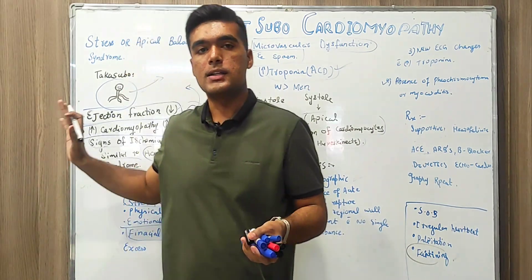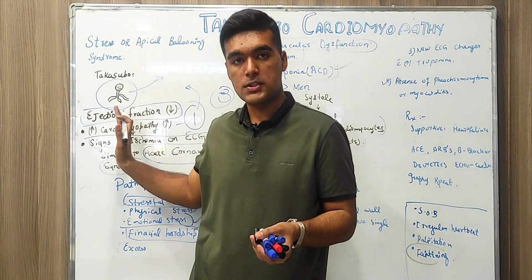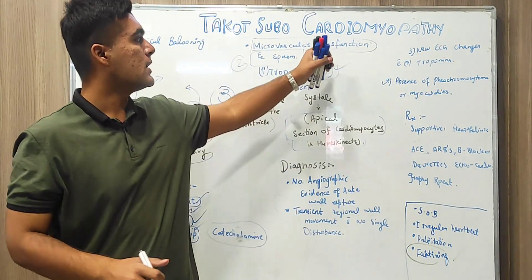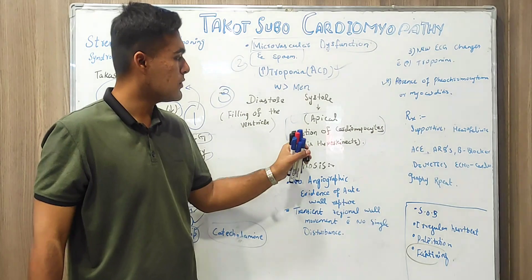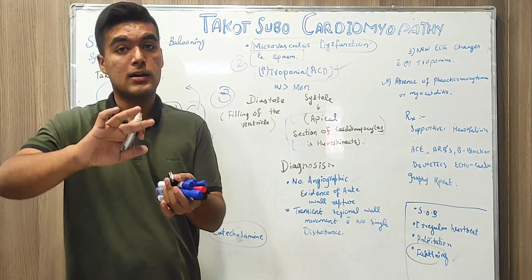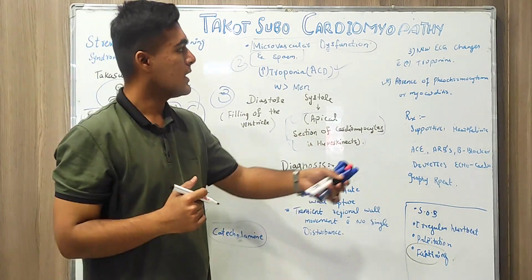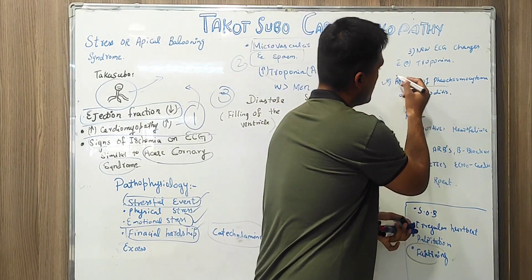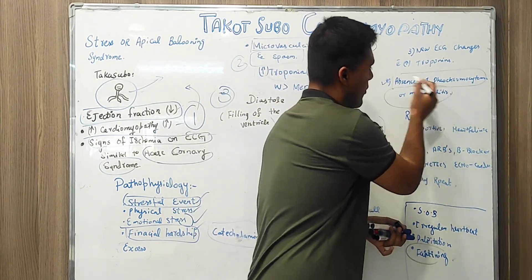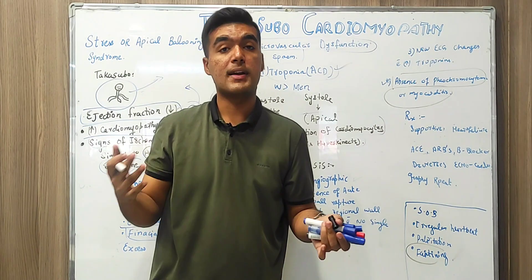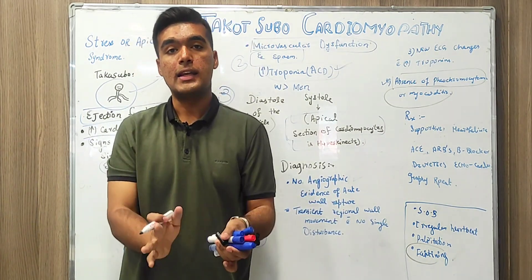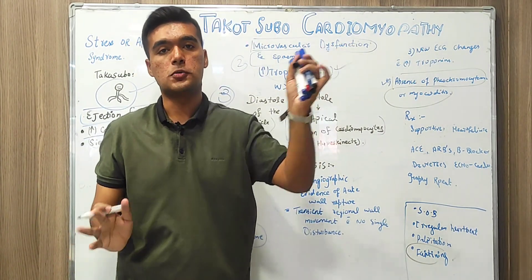So with that we will see ECG changes, signs of ischemia. We see vascular dysfunction. We see apical systole dysfunction as well as pheochromocytoma absence on myocarditis. So they are also very important identification in diagnosing of Takotsubo Cardiomyopathy.